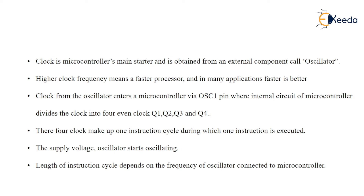The clock is the microcontroller's main starter and it is obtained from an external component called an oscillator — it may be an RC oscillator, it may be a crystal oscillator, or we can give an external clock pulse from a function generator. The clock rate is typically referred to as the frequency at which the clock generator of the processor can generate pulses, and this pulse is used for synchronization between the tasks of the microcontroller.